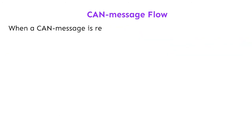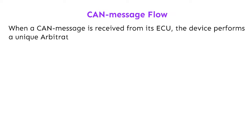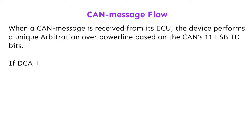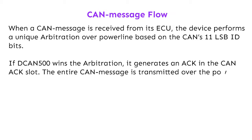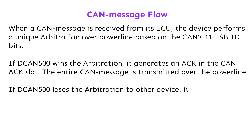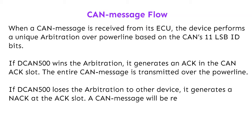When a CAN message is received from its ECU, the device performs a unique arbitration over the powerline based on the CAN's 11 LSB ID bits. If the DCAN 500 wins the arbitration, it generates an AC in the CAN AC slot and the entire CAN message is transmitted over the powerline. If the DCAN 500 loses the arbitration to other devices, it generates a NAC at the AC slot, and a CAN message will be received from the powerline and transferred to the ECU.